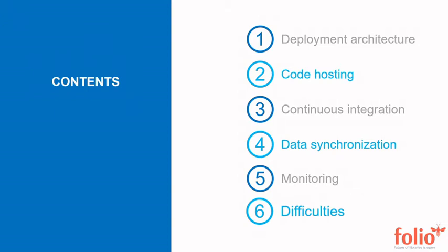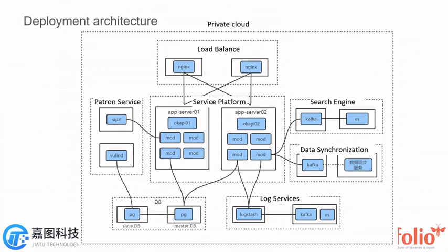Here are the contents I will talk about. First, Deployment Architecture. Shanghai Library uses private cloud for deployment. There are two database services, two Kafka and application services, and two front-end services. The whole system runs on VMware, and the operating system is CentOS 7.